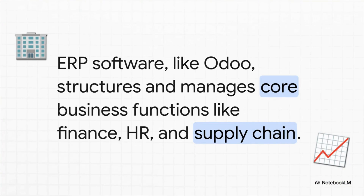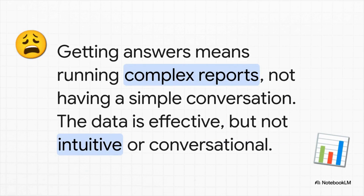Your ERP system is literally the central nervous system for your company. It's handling everything — from finance and manufacturing, to your supply chain, HR, all of it. It's the operational backbone holding everything together. And that's the problem. The old way of getting information out of these systems is just so rigid. You have to know exactly which report to run, which filters to apply. It's powerful, sure, but it's not intuitive. It's definitely not a conversation.